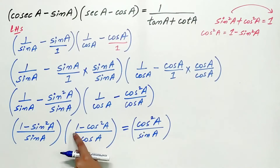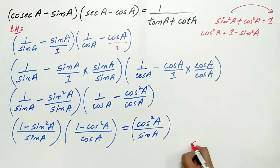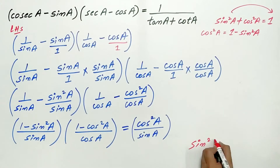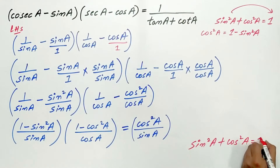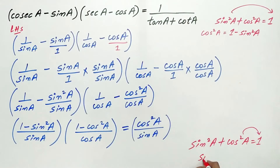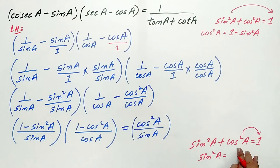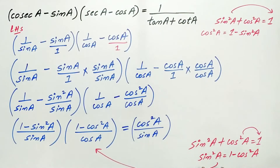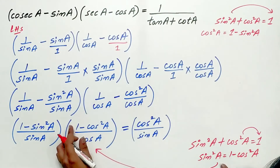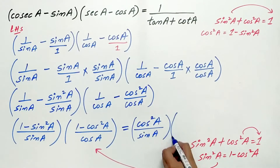Now what is the value of 1 minus cos²A? From the identity sin²A + cos²A = 1, transpose cos²A to the right hand side, so 1 minus cos²A equals sin²A. Substitute sin²A in place of 1 minus cos²A.